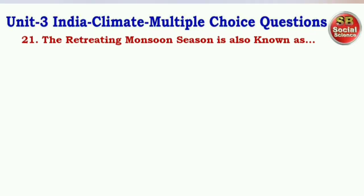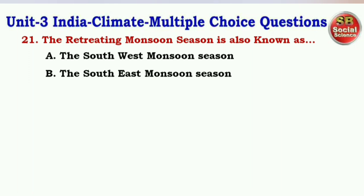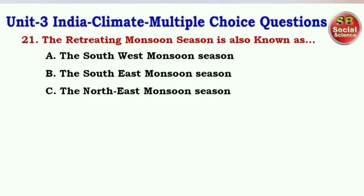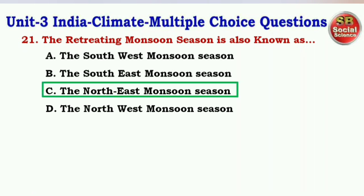Next question: The retreating monsoon season is also known as — options are the South West Monsoon Season, the South East Monsoon Season, the North East Monsoon Season, the North West Monsoon Season. The right answer is option C — the North East Monsoon Season.